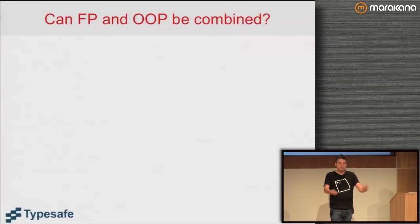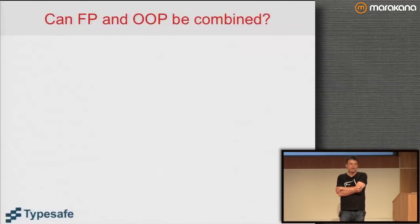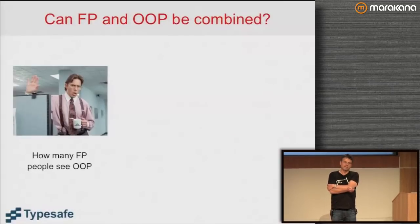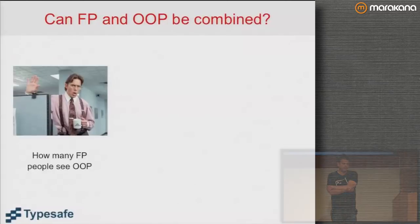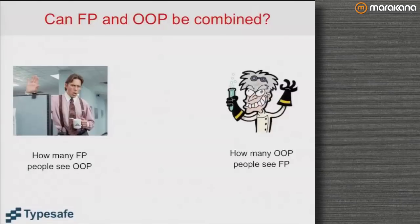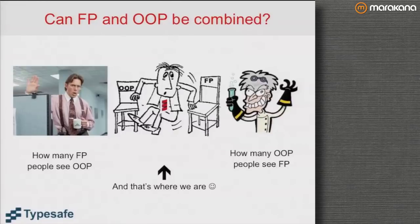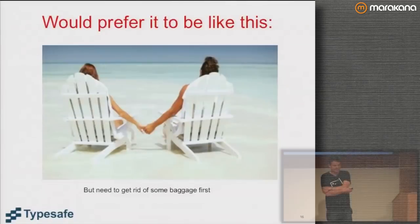We want to combine functional and object-oriented programming, and technically that is quite possible. The challenges are more social — they lie in the way one community sees the other. That's how many functional programmers see OOP, and that's how many OO programmers see functional programming — like a little mad scientist where you don't know whether he's crazy or dangerous or both. We're really a bit between two chairs, and sometimes it's hard to sit between two chairs.